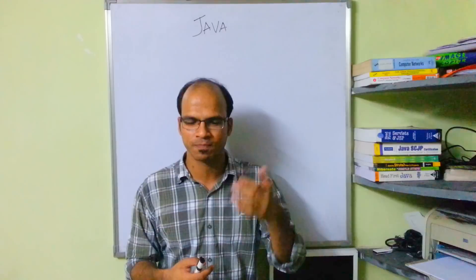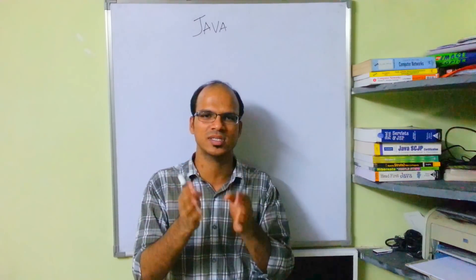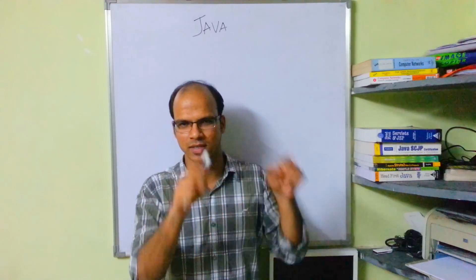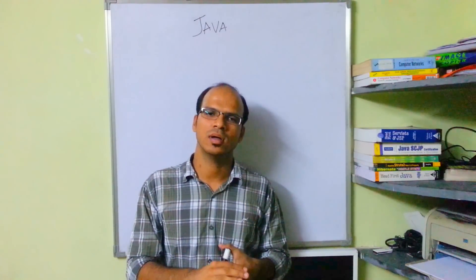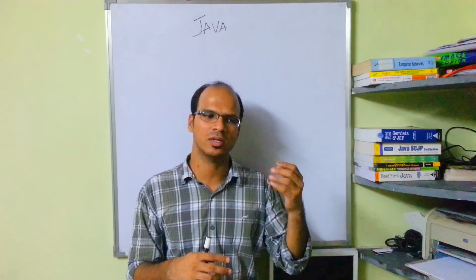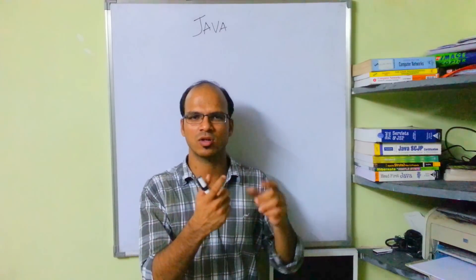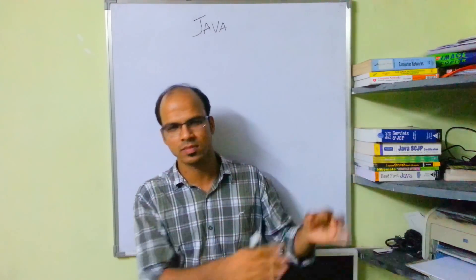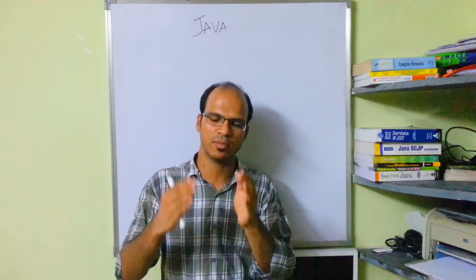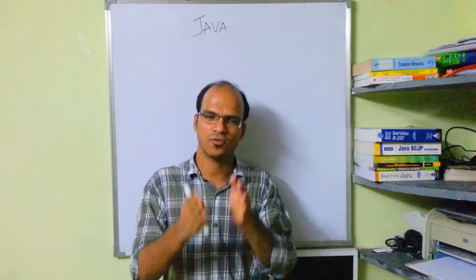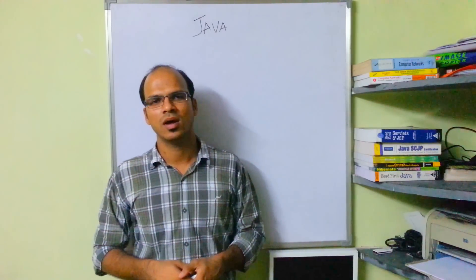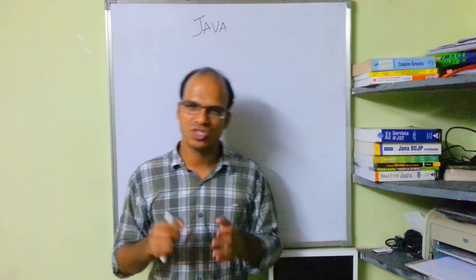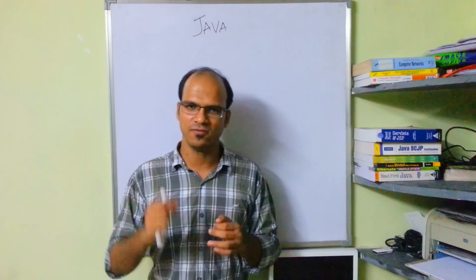Then in 1995 they wanted to make a patent on it or get some legal rights on the technology called Oak. The problem was you cannot use the word 'Oak' — there was some issue. So they came up with a new name called Java. From 1995 onward we have the name Java.